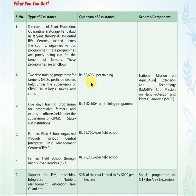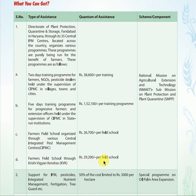The two-day training costs ₹38,600 per training and the five-day training costs ₹1,52,100 per training. Farmers Field School organized through various Central Integrated Pest Management centers costs ₹26,700 per field school. Farmers Field School through Krishi Vigyan Kendra costs ₹29,200 per field school — this is a very important point.